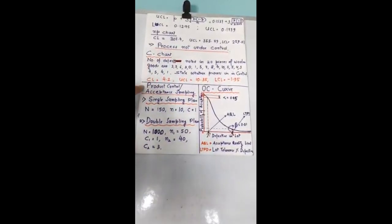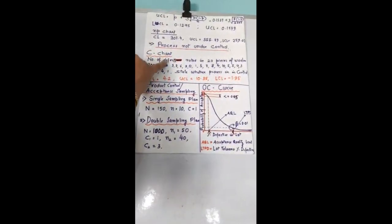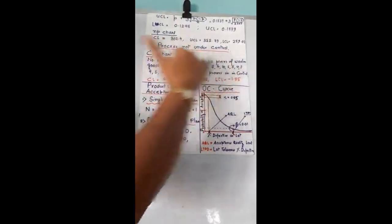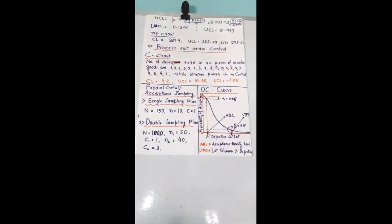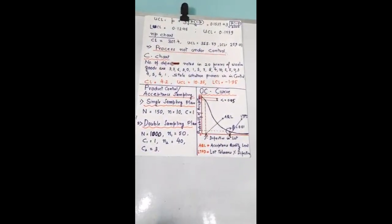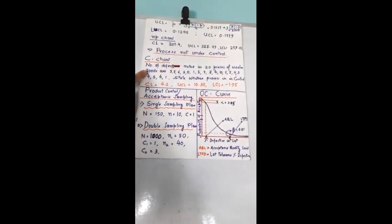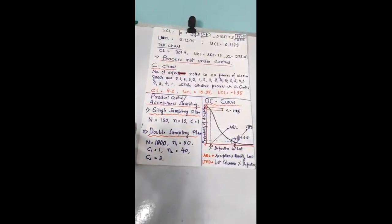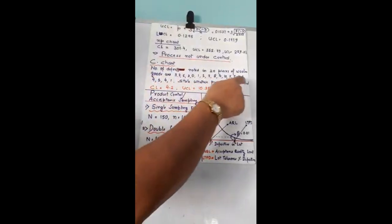This is an example of C chart. Here what is given? Number of defects — note here it is not defective, rather defects. Number of defects noted in 20 pieces of woolen goods are given. State whether the process is in control. Now how to understand that we have to follow C chart: no measurements are given, just the number of defects in each sample. There are 20 samples and there is no sample size specified — only the number of defects in each sample is specified. Since the sample size is not given, this is an example of C chart. C's are nothing but the number of defects, and all these things are to be plotted.